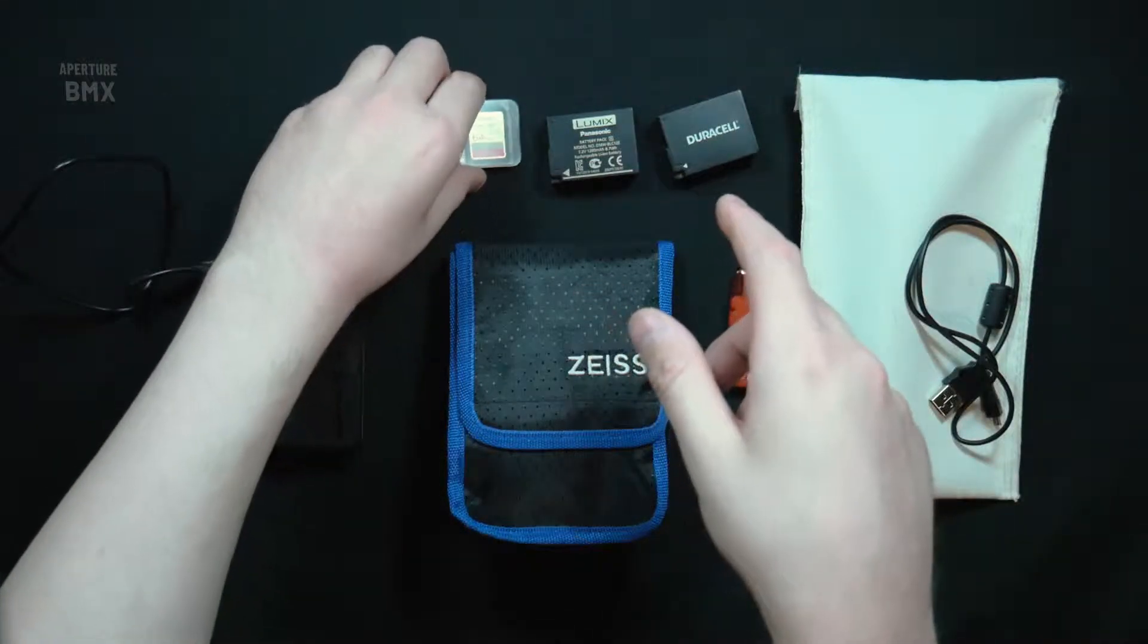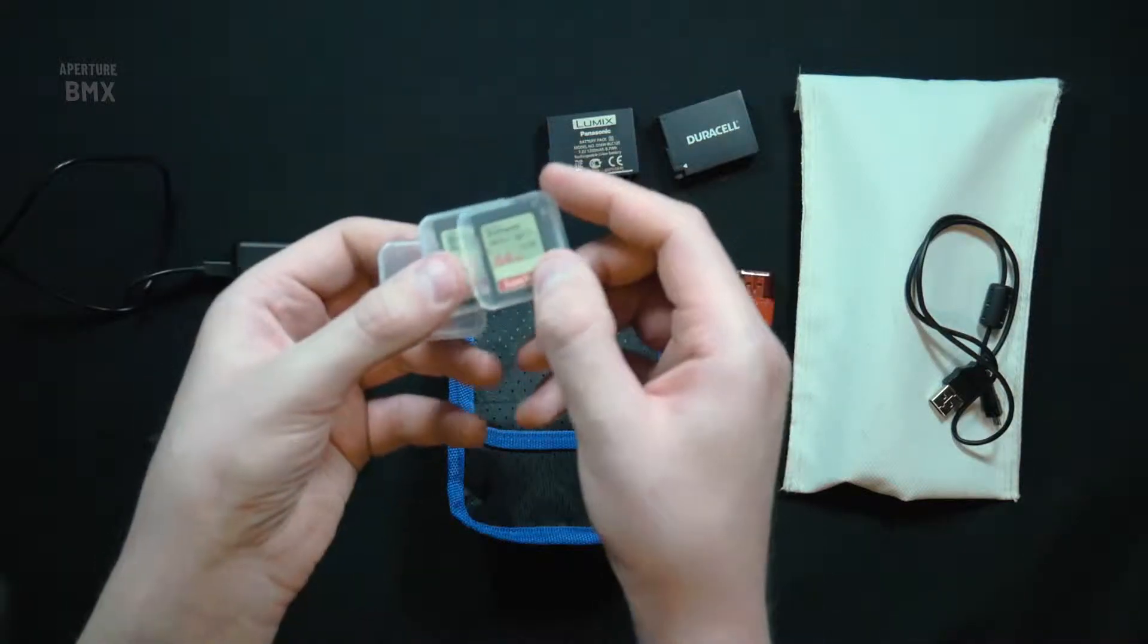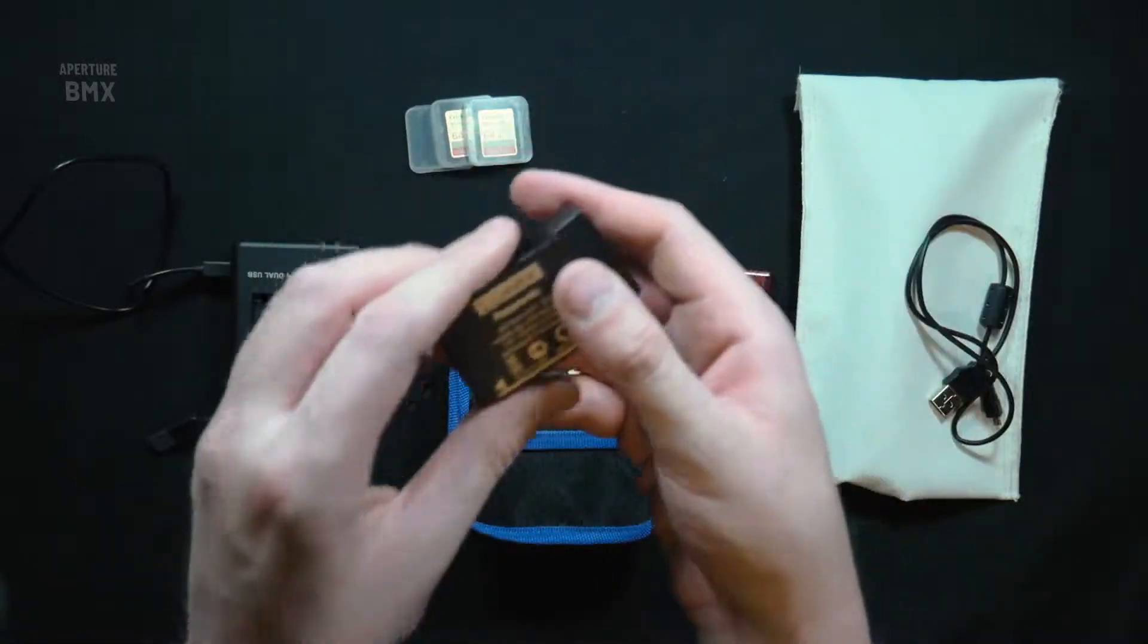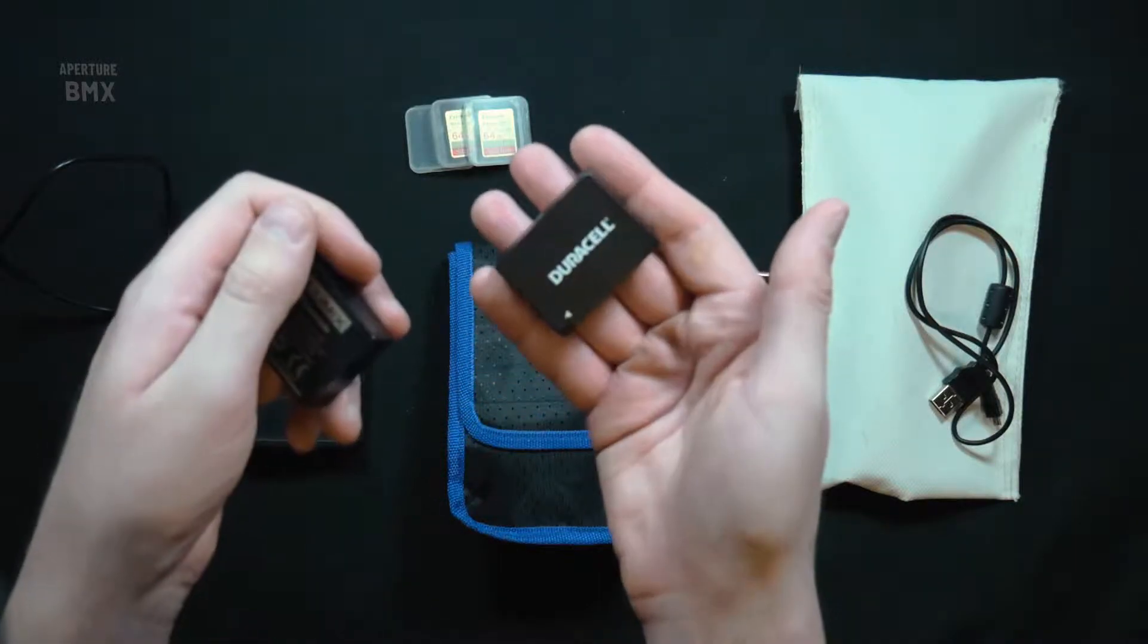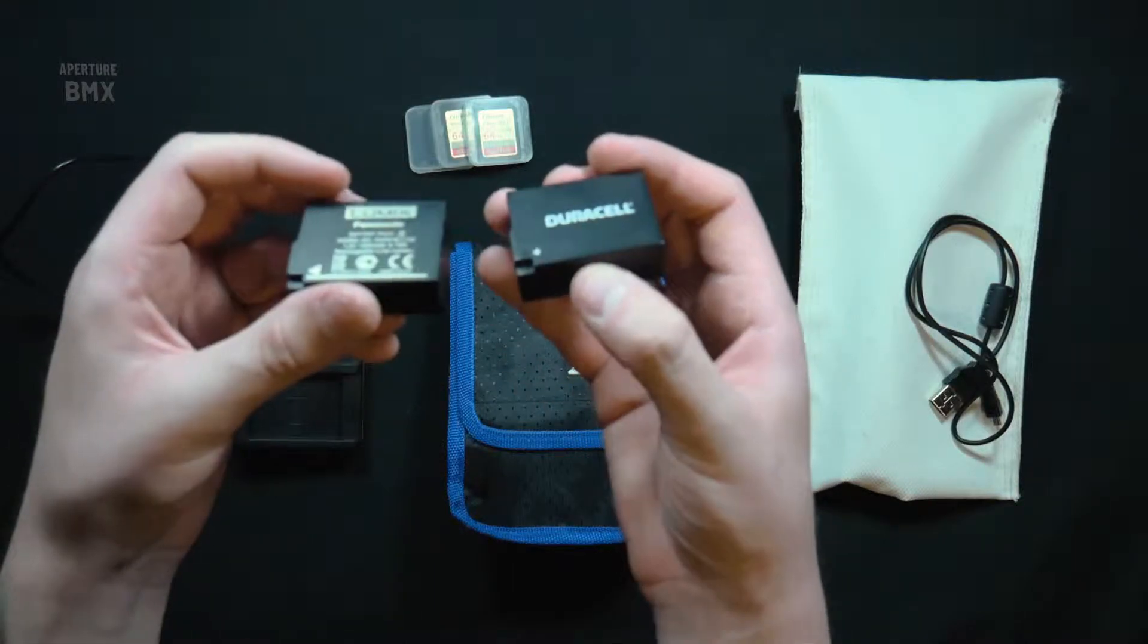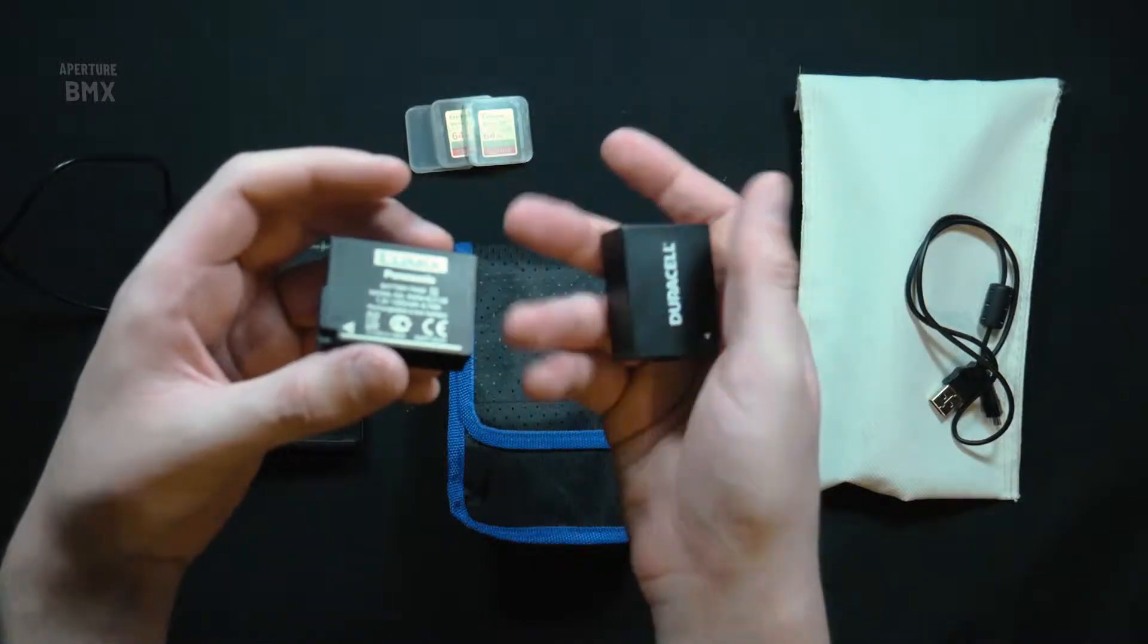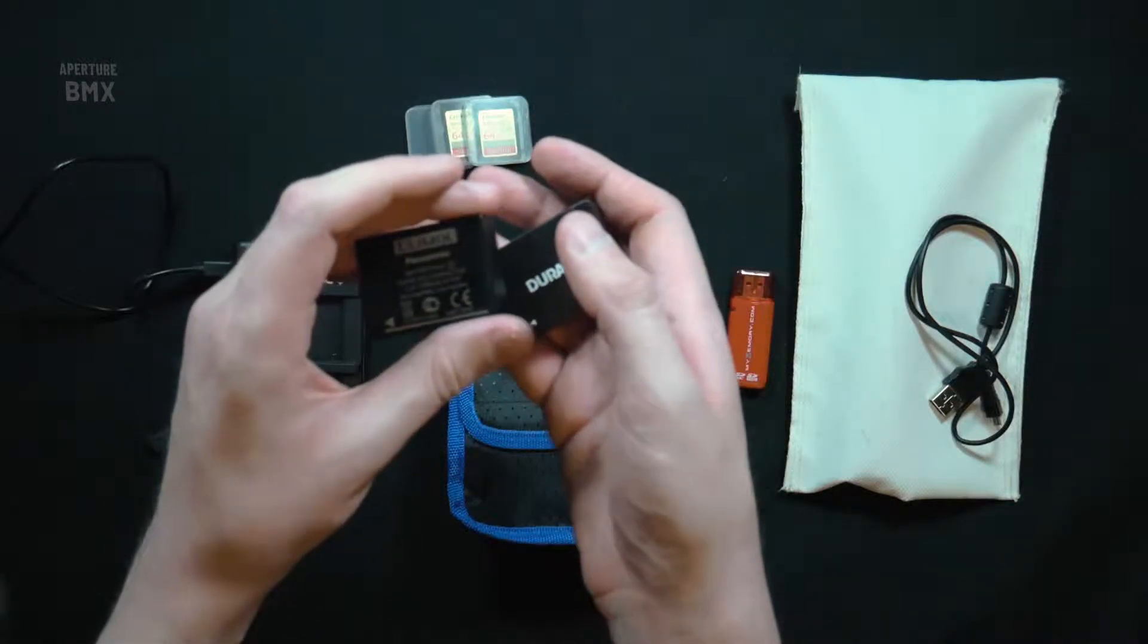Let's talk about all this stuff on the table. First of all, memory cards—I have three SanDisk memory cards. One's in the camera right now. I also have these batteries—this is the Lumix official battery that you get with the camera, and this is a Duracell battery, which is basically a third-party copy. I've got three of these—one's in the camera—and that easily lasts me an entire day of filming racing.